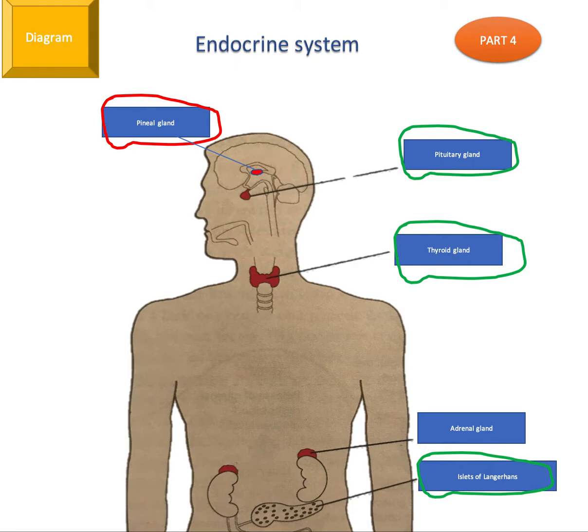So in this video, I will be talking more about the endocrine system. In part 3 and part 2 of this series, I talked about the islets of Langerhans, the thyroid gland, and pituitary gland. But in this part, part 4, we'll focus on what happens in the pineal gland specifically.